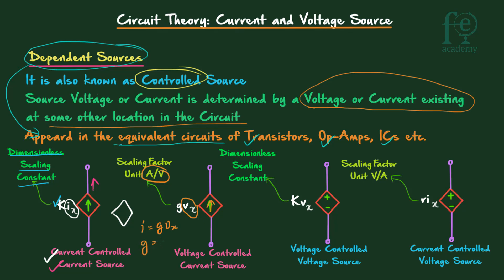G equals I divided by Vx, and since the unit of current is ampere and the unit of voltage is volt, the unit of G is A/V. The third type has plus and minus marked inside the diamond, meaning it is a voltage source — this is the voltage-controlled voltage source (VCVS). The voltage across it depends on a voltage Vx at some other location, multiplied by a dimensionless scaling constant K.